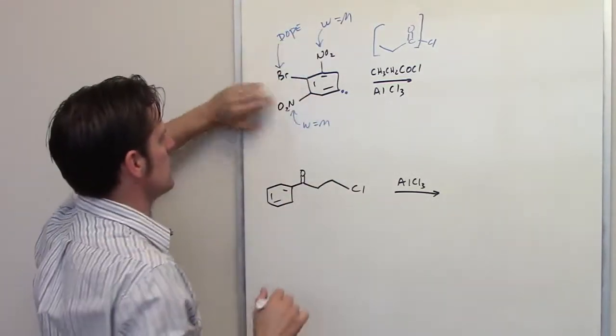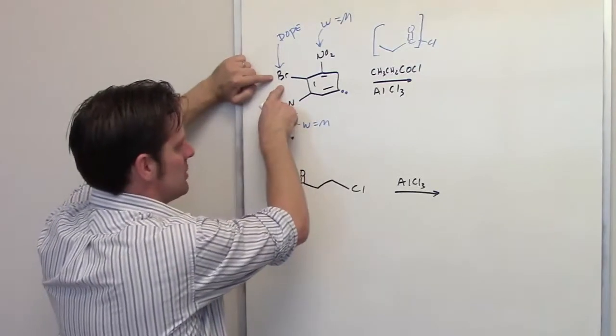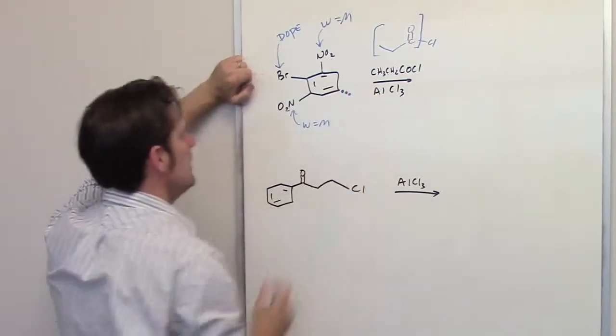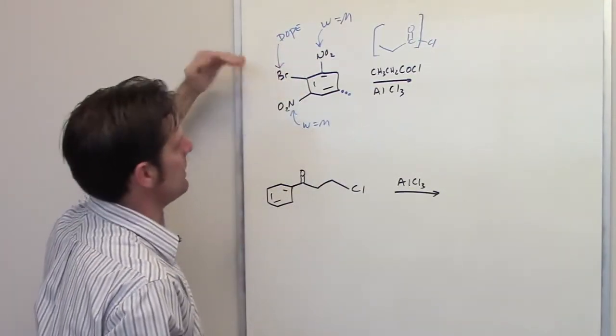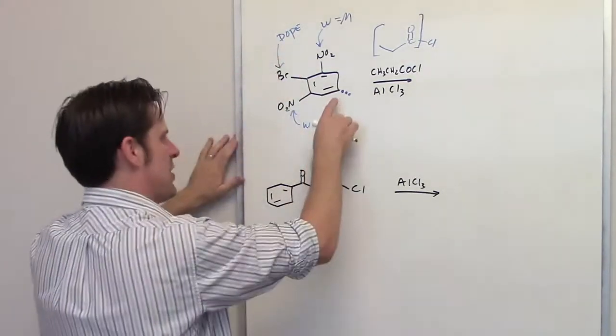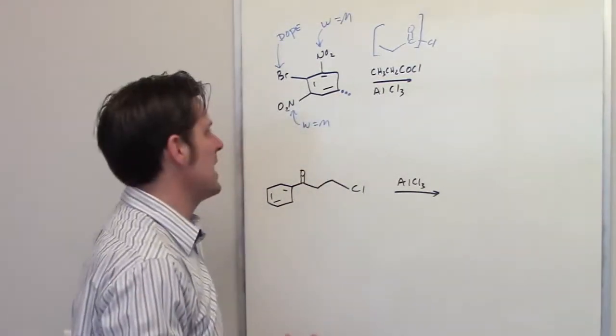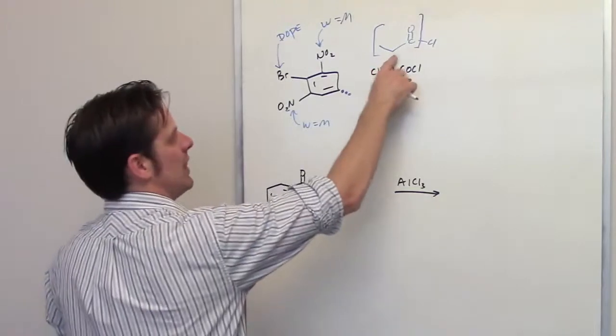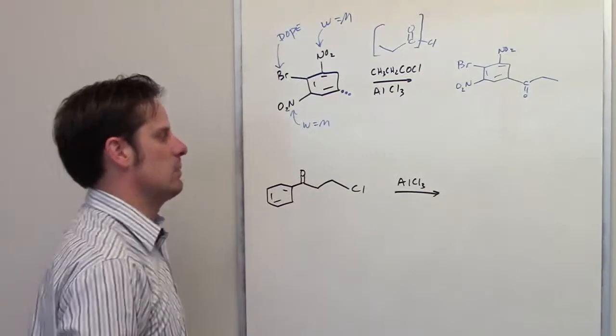So the only position that the bromine can actually push for is going to be the position that's para to it. Let's ignore these nitros and just look at the ring and determine where that is. Well, the position that's para to this bromine is, of course, on the opposite side, which is the same position that is meta to each of these nitros. So both of the nitros and the bromine are all vying or pushing for that position to be the position of substitution. What does that mean? Well, it means that this Friedel-Crafts acyl group is going to attach at that position giving me this as my final product.